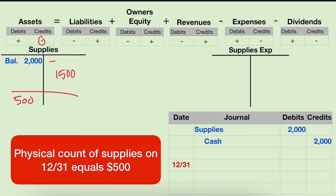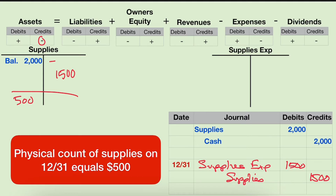We will credit supplies for $1,500. Now we have to debit something — we will debit supplies expense. Expenses are used assets. So at the end of the year, we'll take this asset and move it to the expense. That's a very common year-end adjusting entry.